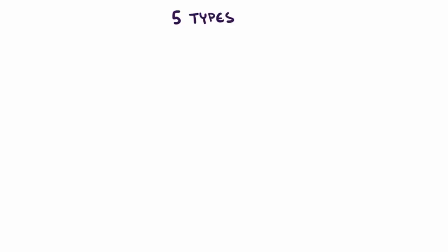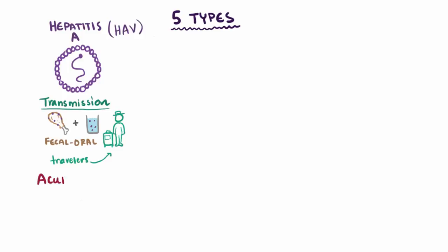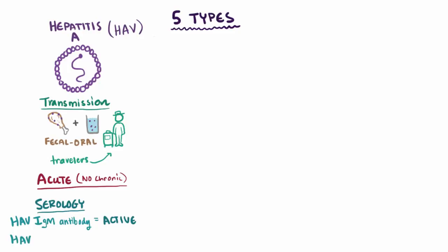There are 5 known types of hepatitis virus that have slightly different and unique properties. Hepatitis A is transmitted through ingestion of contaminated food or water — the fecal-oral route — and is known to be acquired by travelers. Hepatitis A virus, or HAV, is almost always acute with essentially no chronic form. An HAV-IgM antibody indicates an active infection, whereas an HAV-IgG antibody is a protective antibody indicating recovery from HAV or prior vaccination.